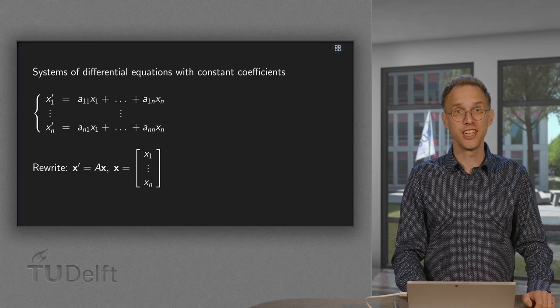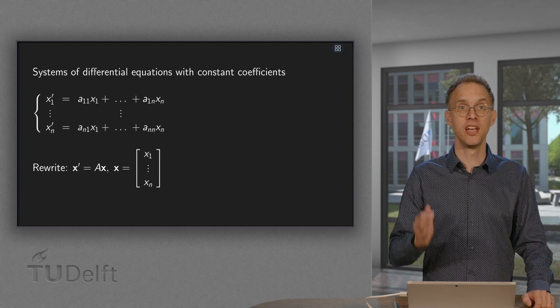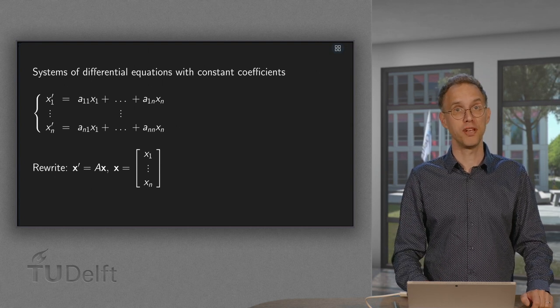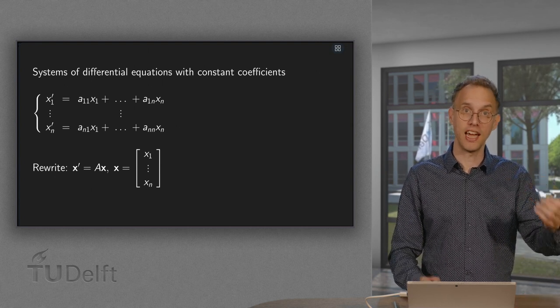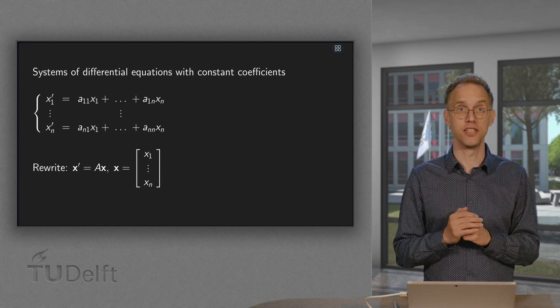If we have a homogeneous system of differential equations, we can rewrite our system in the form x prime equals A times x, where A is a matrix.